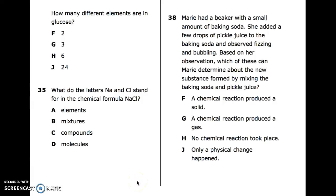38: Maria had a beaker with a small amount of baking soda. She added a few drops of pickle juice to the baking soda and observed fizzing and bubbling. Based on her observation, which of these can Maria determine about the new substance formed by mixing the baking soda and pickle juice? F. A chemical reaction produced a solid. G. A chemical reaction produced a gas. H. No chemical reaction took place. J. Only a physical change happened.